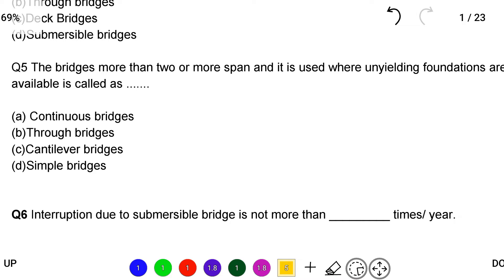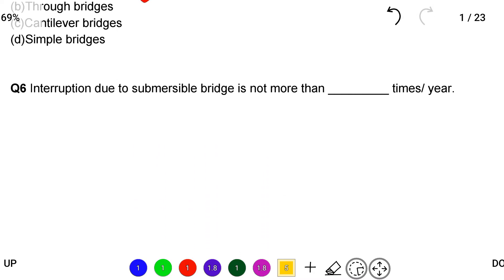Next question: the bridge more than two or more spans and it is used where unyielding foundations are available is called option A continuous bridge, option B through bridge, option C cantilever bridge, option D simple bridge. So the correct answer is option A continuous bridge.